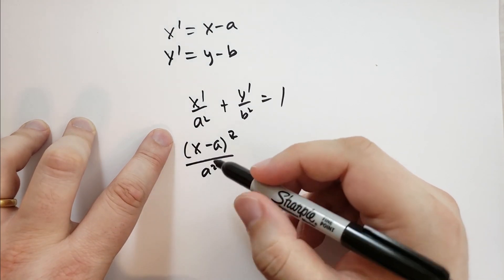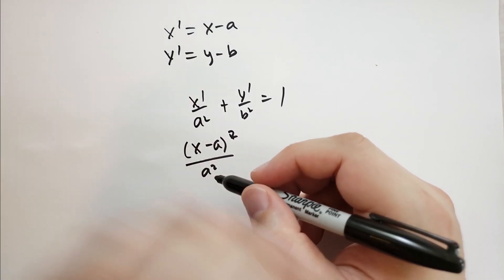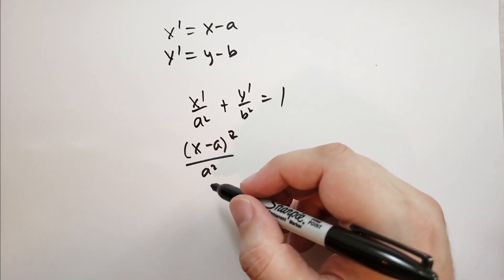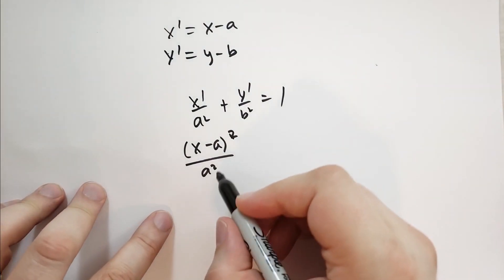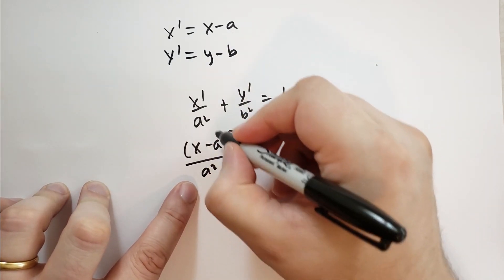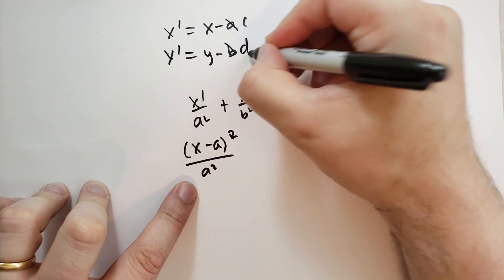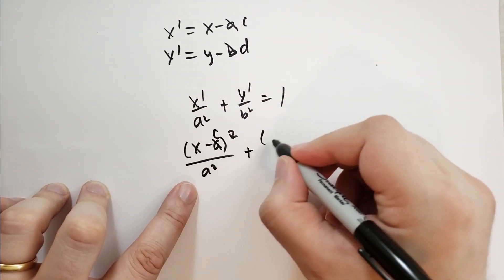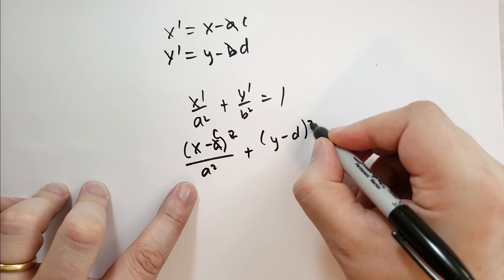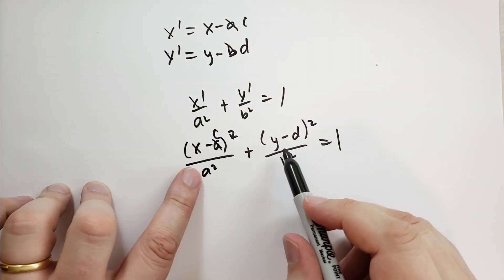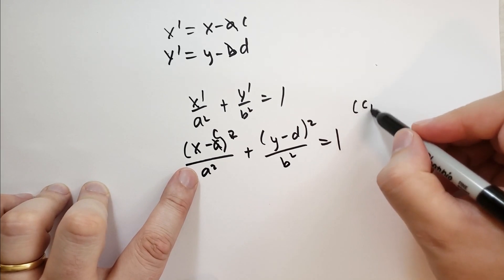I'm sorry, this is the different a. We have to use a different a. Let's call this c and d. So this is x minus c squared over a squared plus y minus d squared over b squared is equal to 1. And that will give you an ellipse centered at c, d.